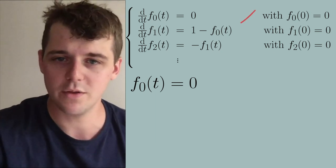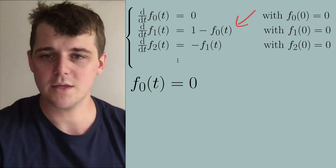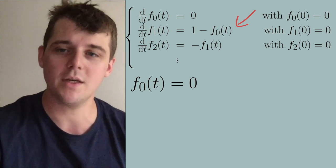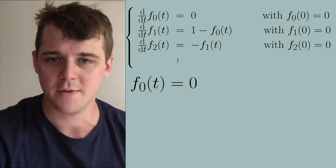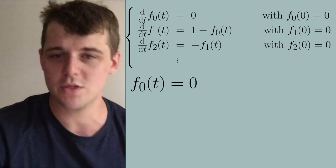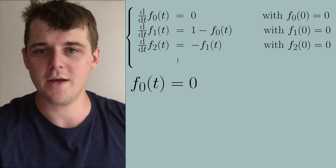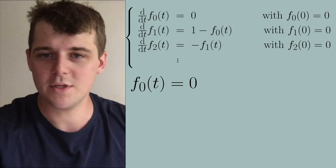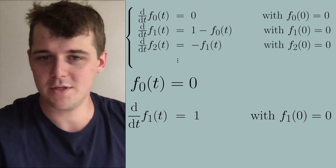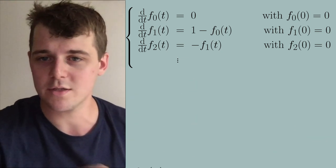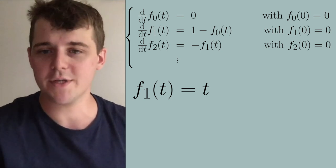Going to the next order in the perturbation series, the time derivative of f1 equals 1 minus f0, with f1 starting at zero — again because our initial condition had no g dependence. Since f0 is zero, we get the differential equation where the time derivative of f1 equals one with initial condition zero. Anyone who knows calculus can find that f1(t) = t, which is our first term in the perturbation series.